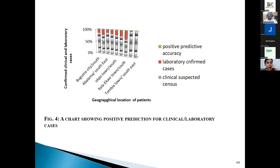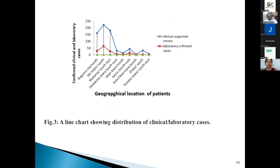The analysis was also presented with graph representations showing clinical and laboratory confirmed cases of the different locations, along with positive predictive accuracy levels, laboratory confirmed cases, clinical suspected cases, and the geographical distribution of patients in line with the distribution of clinical and laboratory cases.